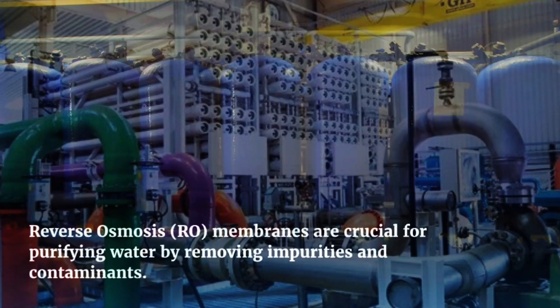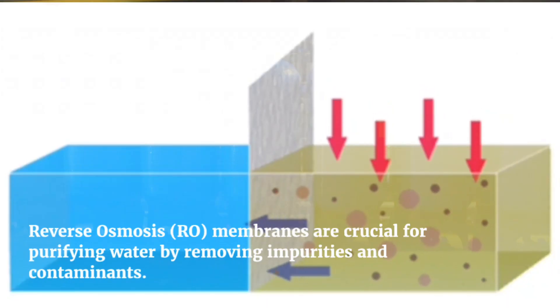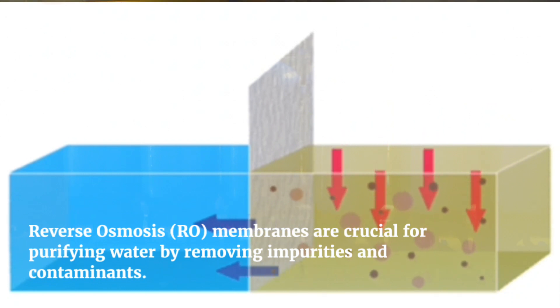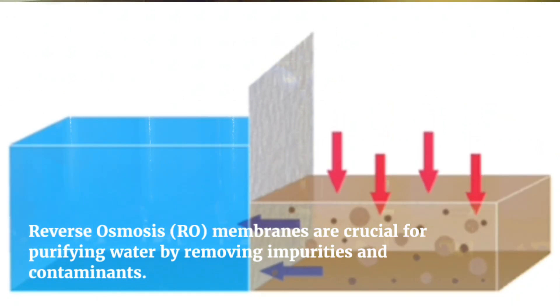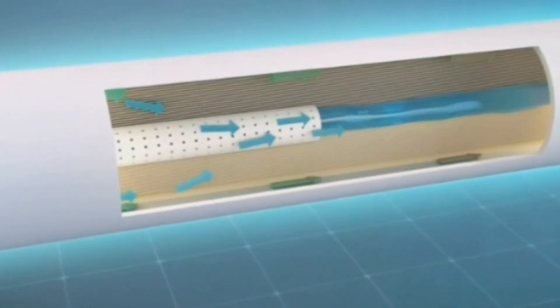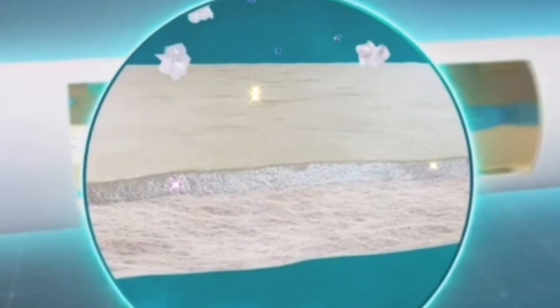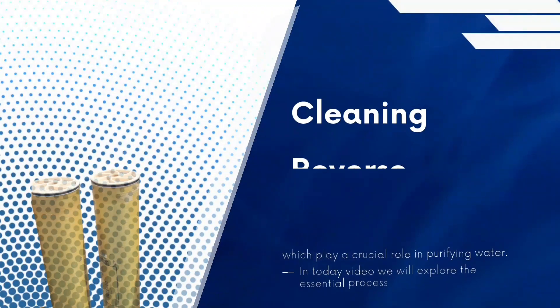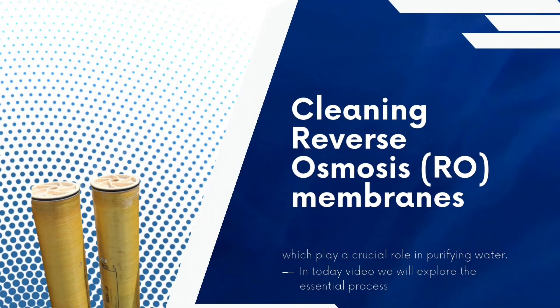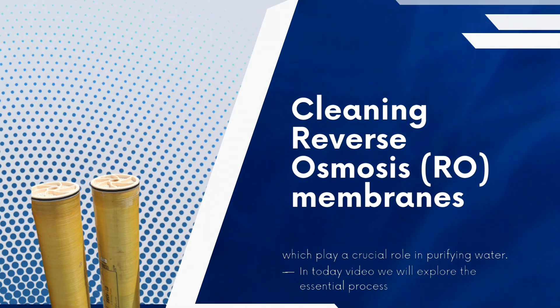Reverse osmosis is a water purification process that uses a semi-permeable membrane to remove impurities and contaminants from water. The RO membrane acts as a barrier, allowing only water molecules to pass through while blocking larger molecules and particles. In today's video, we will explore the essential process of cleaning reverse osmosis RO membranes, which play a crucial role in purifying water.